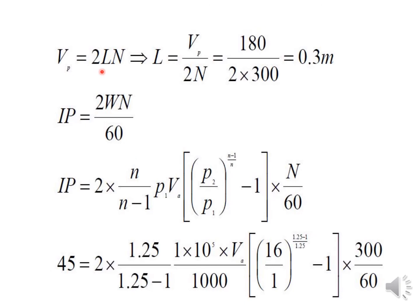First, we use the piston speed formula: vp = 2 × L × N. This is an important formula to note. Since vp, L, and N are all given, we can verify: L = vp / (2N) = 180 / (2 × 300) = 0.3 meters, which matches the given stroke length.